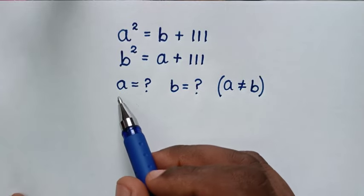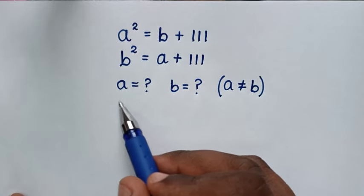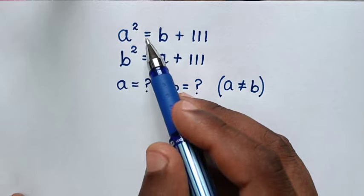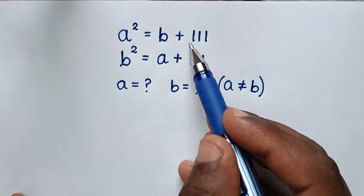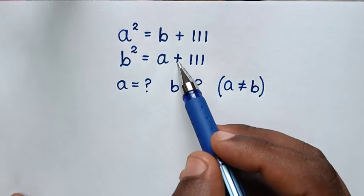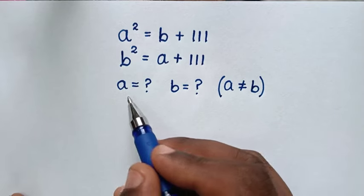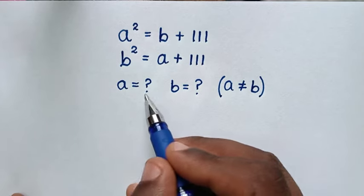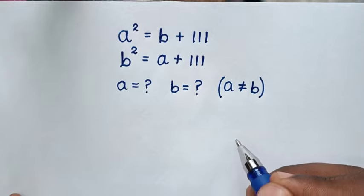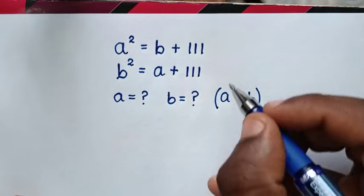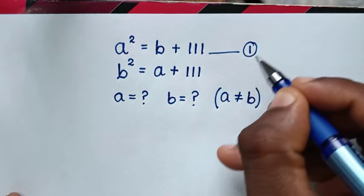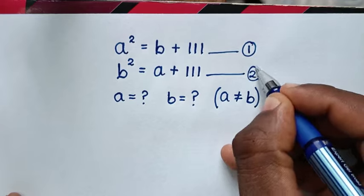Hello, you are welcome to solve this math problem, which is: a squared is equal to b plus 111, b squared is equal to a plus 111, to find the values of a and b such that a is not equal to b. Now first we start by letting the first equation as equation 1 and the second as equation 2.